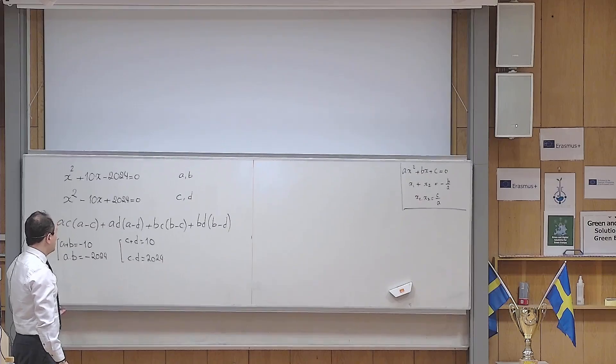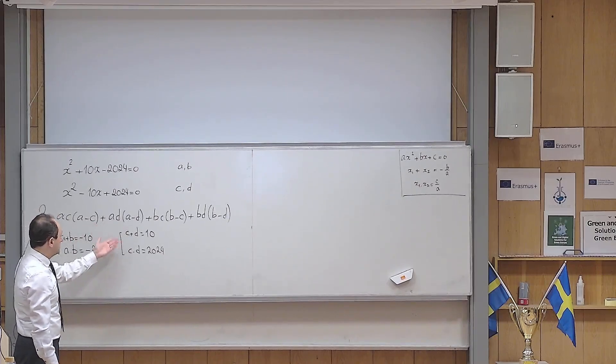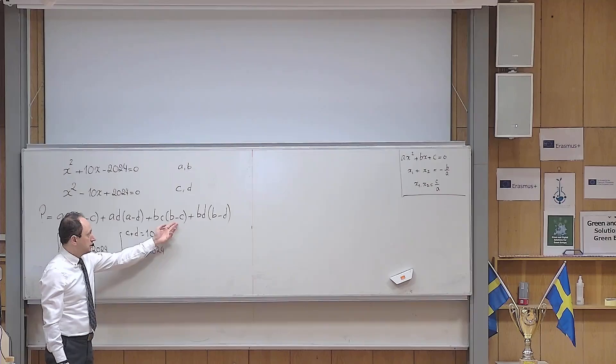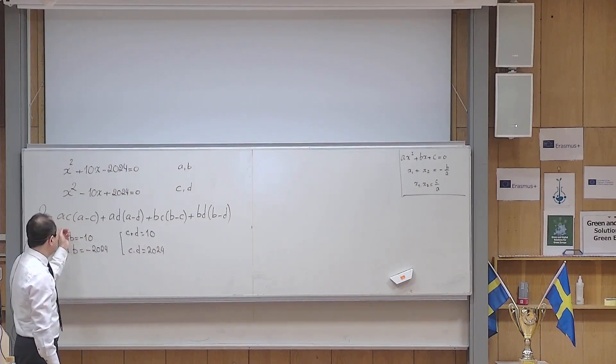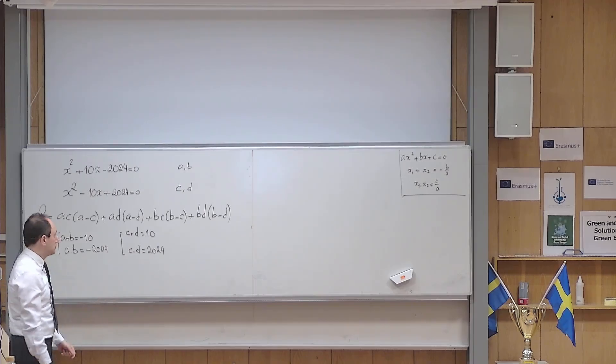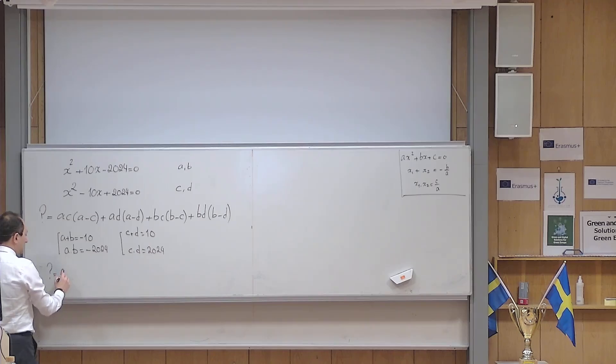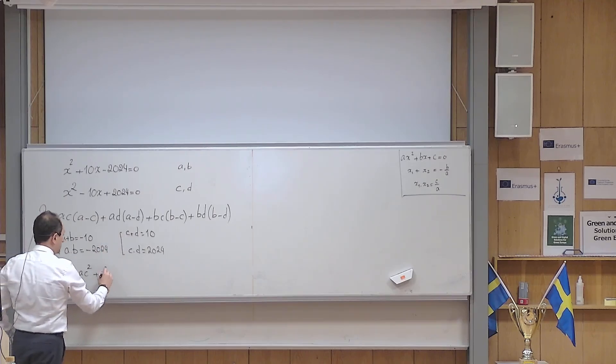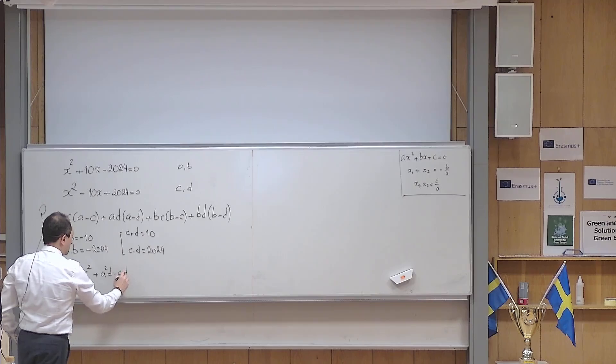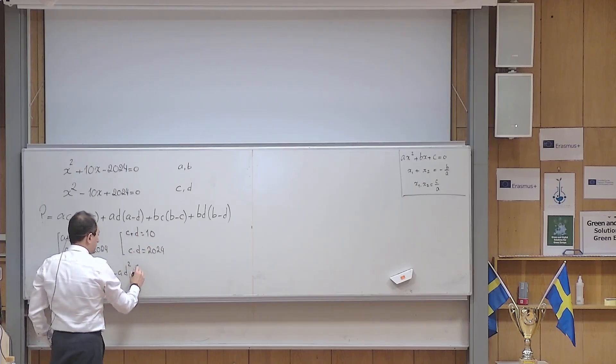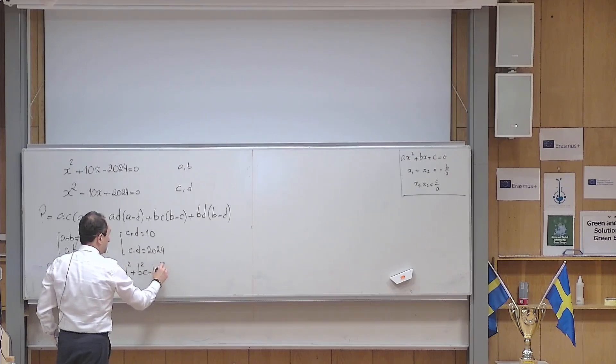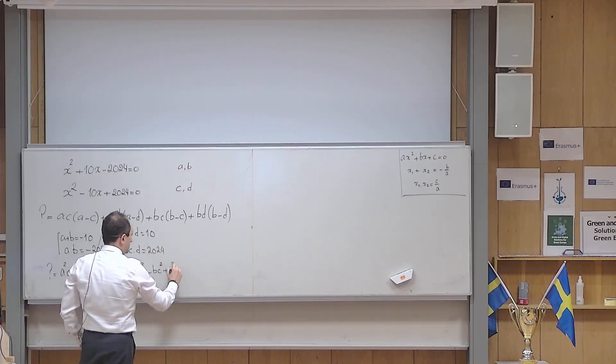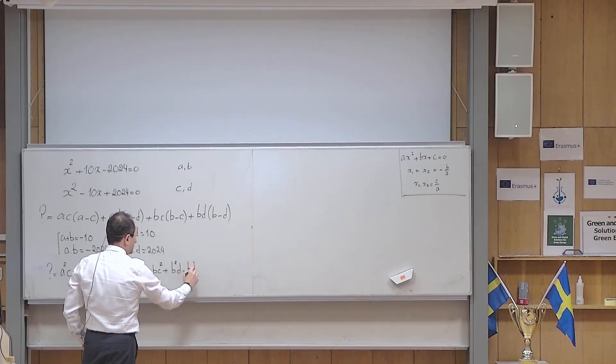There is not a direct connection between the expression here and these, so it would be motivating if I just multiply to see what happens. If I multiply this in, it becomes a squared c minus ac squared, a squared d minus ad squared, b squared c minus bc squared, and finally b squared d minus bd squared.